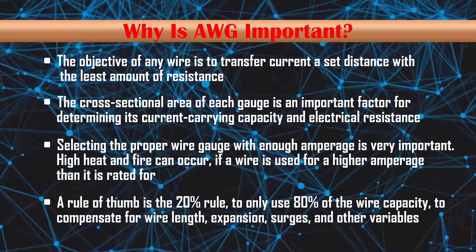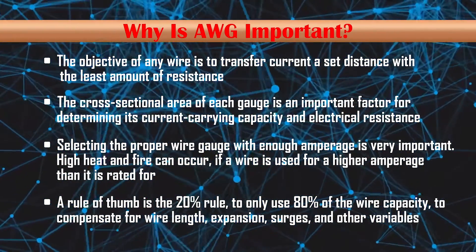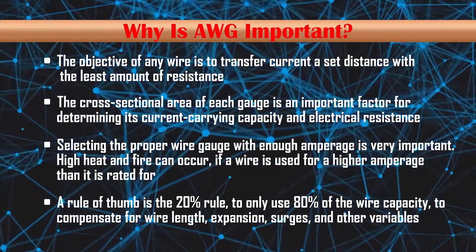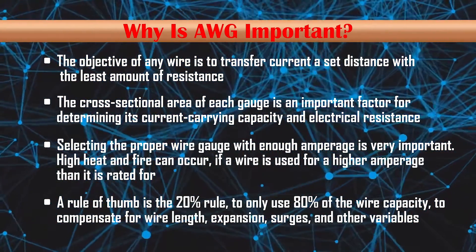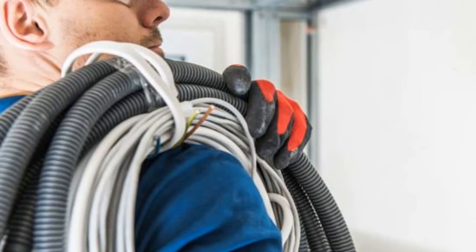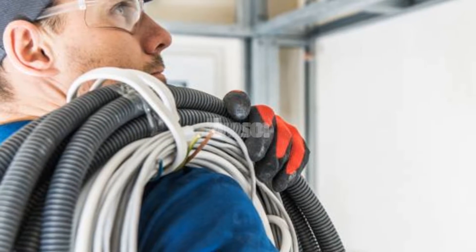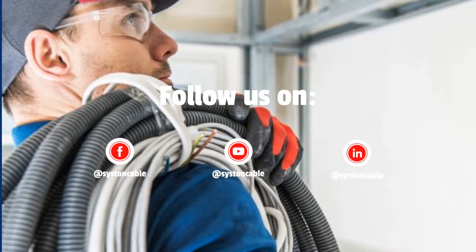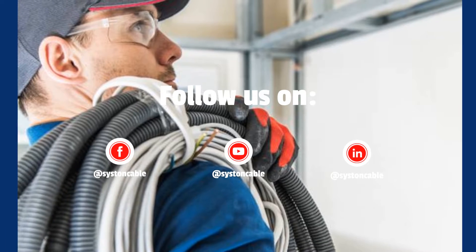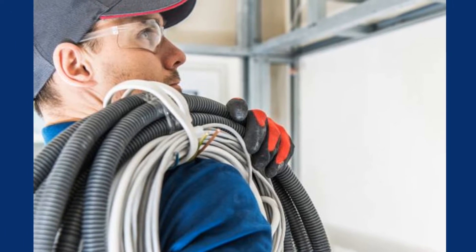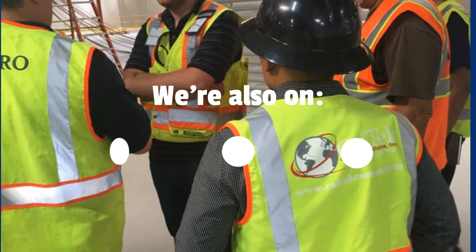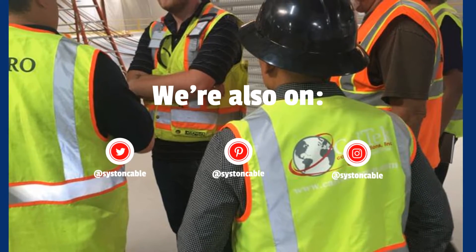A rule of thumb is the 20% rule: only use 80% of the wire's capacity to compensate for wire length, expansion, surges, and other variables.